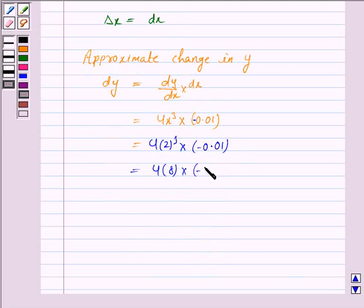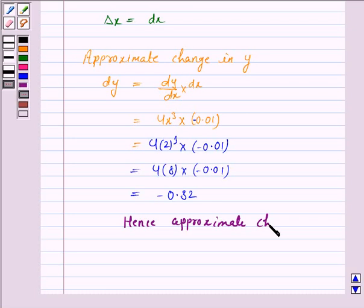8 into minus 0.01, which is equal to minus 0.32. Hence the approximate change in y is minus 0.32.